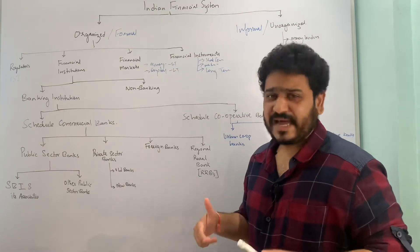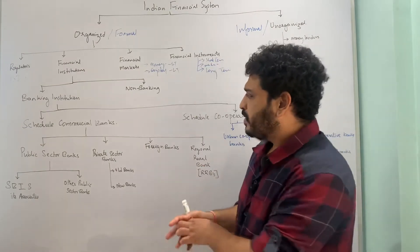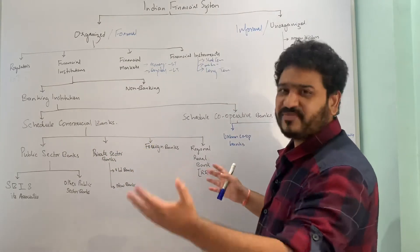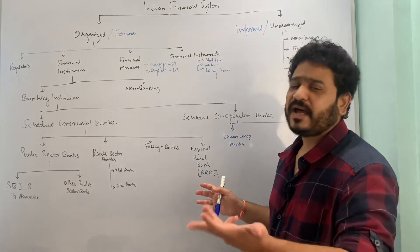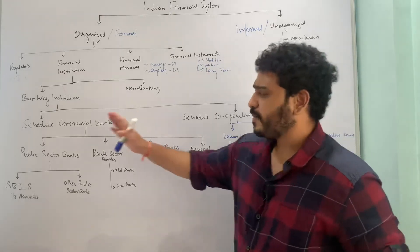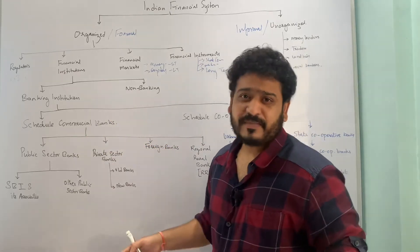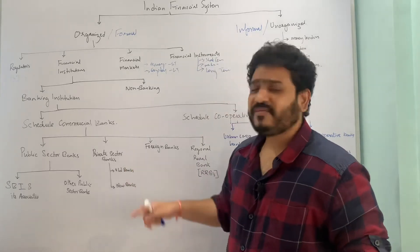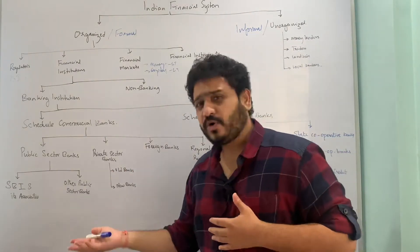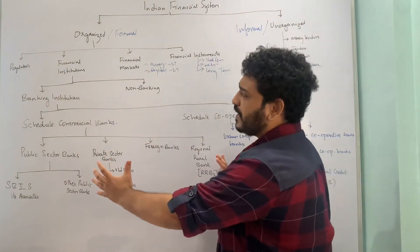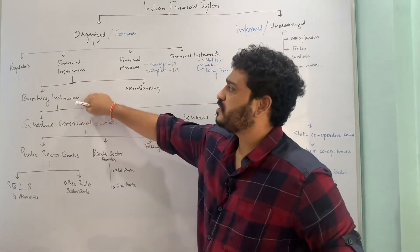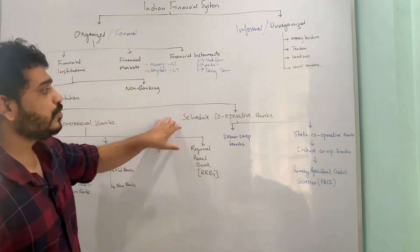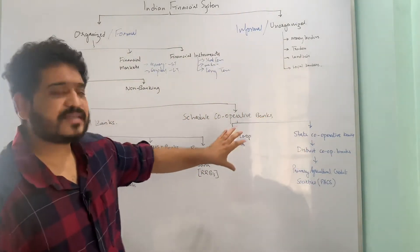So to summarize, scheduled commercial banks are further classified into public sector, private sector, foreign sector, and regional rural banks. Public sector banks are further classified into State Bank and its associates and other public sector banks. Private banks are classified as old banks and new banks. This is what scheduled commercial banks look like under banking institutions under financial institutions. Let us now move to the scheduled cooperative banks.